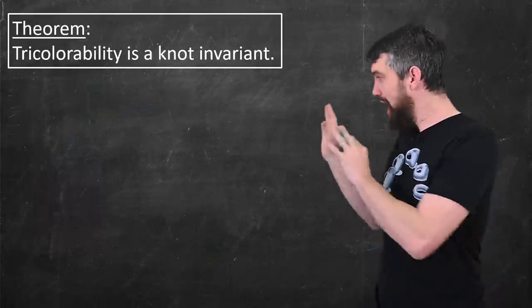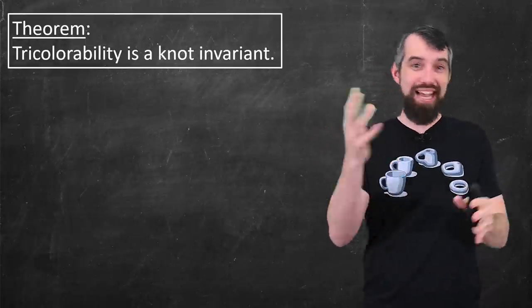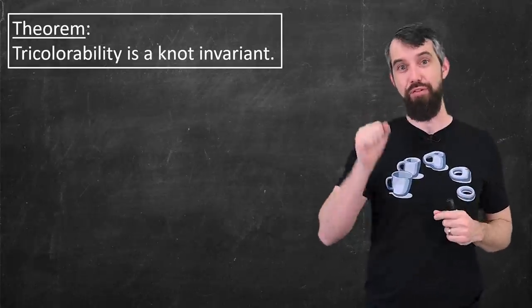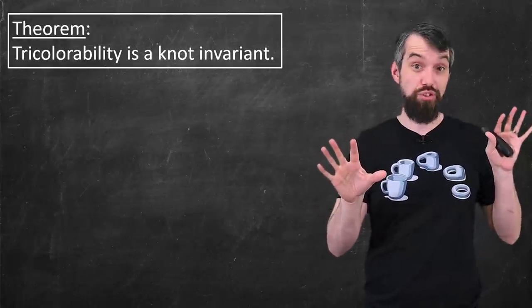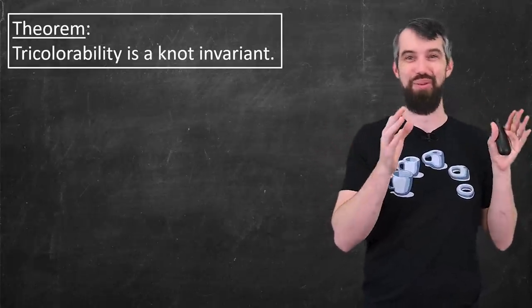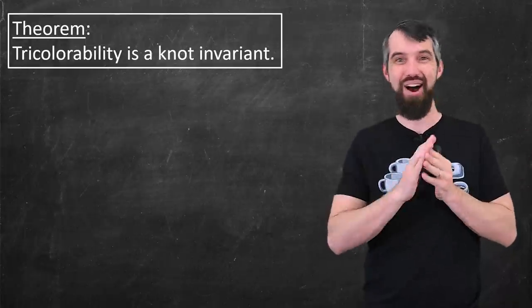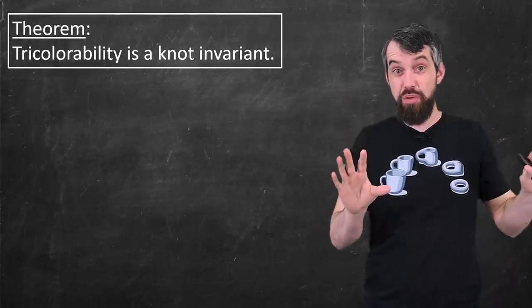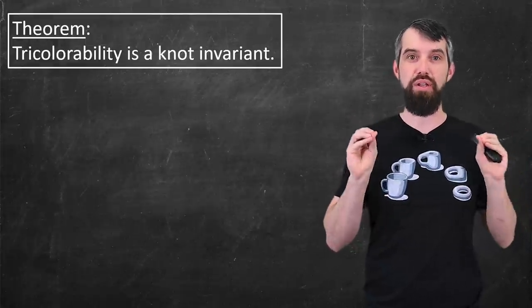But here's where the real magic is. Tricolorability, this binary yes it is or no it is not, is a knot invariant. That is, if one knot is tricolorable and the other is not tricolorable, it's kind of funny saying the word N-O-T and K-N-O-T all the time in this video. Regardless, if those have different values of the properties, then they are different knots.